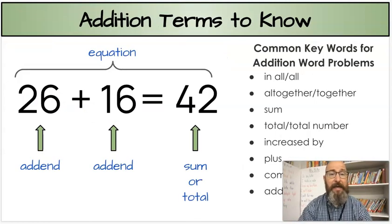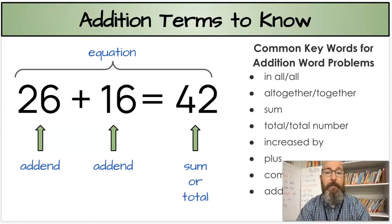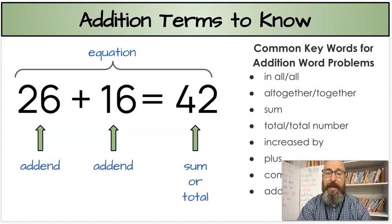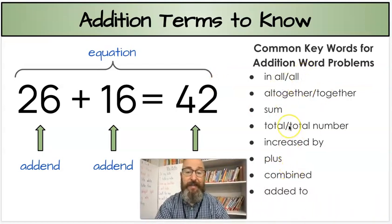Since we're going to be getting into word problems, I do want to make sure I go over our addition and subtraction terms because we might be using some of them today. Our addition terms, the two numbers we're adding are called addends. The answer to an addition problem is called the sum, sometimes a total, but usually a sum. And that whole problem together is called an equation.